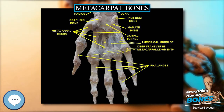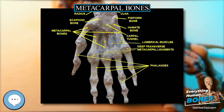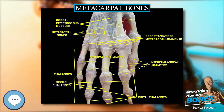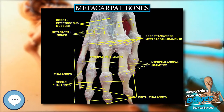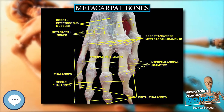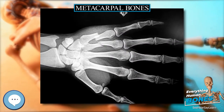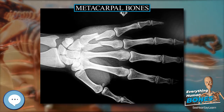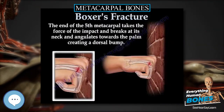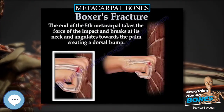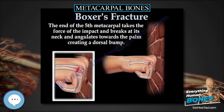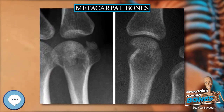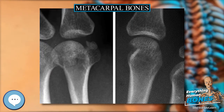Base: the base, or carpal extremity, is of cuboidal form and broader behind than in front. It articulates with the carpal bones and with the adjoining metacarpal bones. Its dorsal and volar surfaces are rough for the attachment of ligaments.